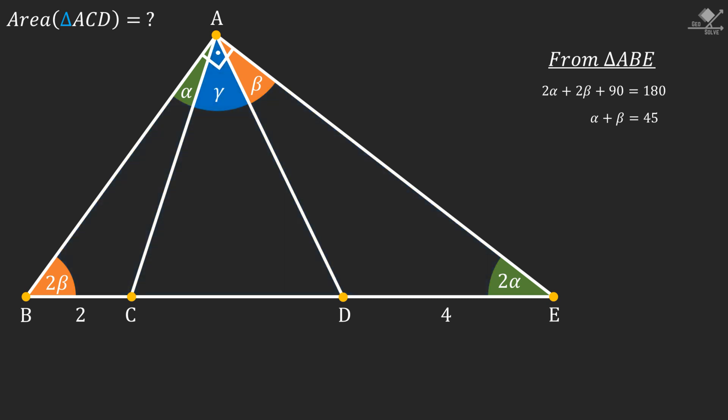Now let's call this blue angle as gamma. From angle A we know that α + β + γ = 90 degrees. We know that instead of α + β we can write 45 degrees. From here gamma will be 45 degrees.